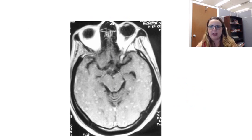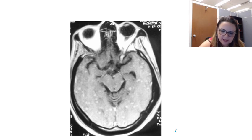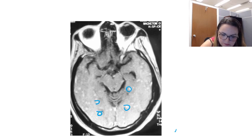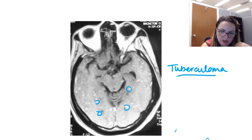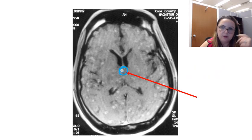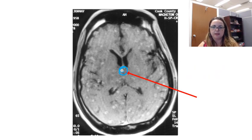CNS TB can seed the brain. Multiple small dots visible on imaging are known as tuberculomas — caseating granulomas distributed throughout the brain. There can also be frank abscess formation directly within the brain parenchyma. These tuberculomas or granulomas represent the same caseating granuloma pattern seen elsewhere in the body, just occurring within the CNS.